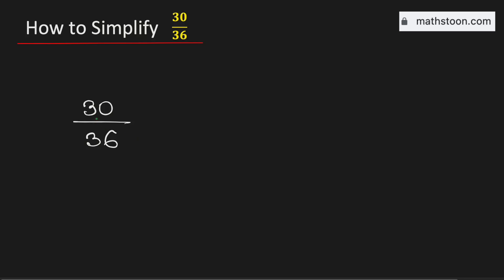In this video let us simplify the fraction 30 over 36 in its simplest form. To do so we will divide both the numbers by their common divisors.